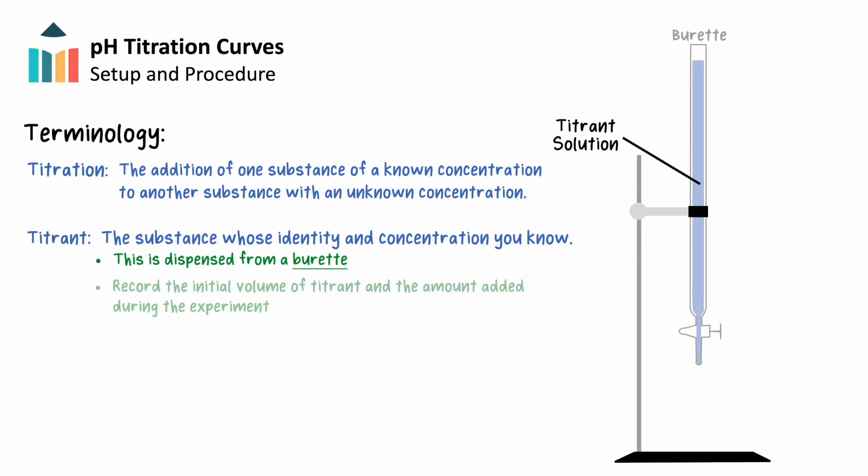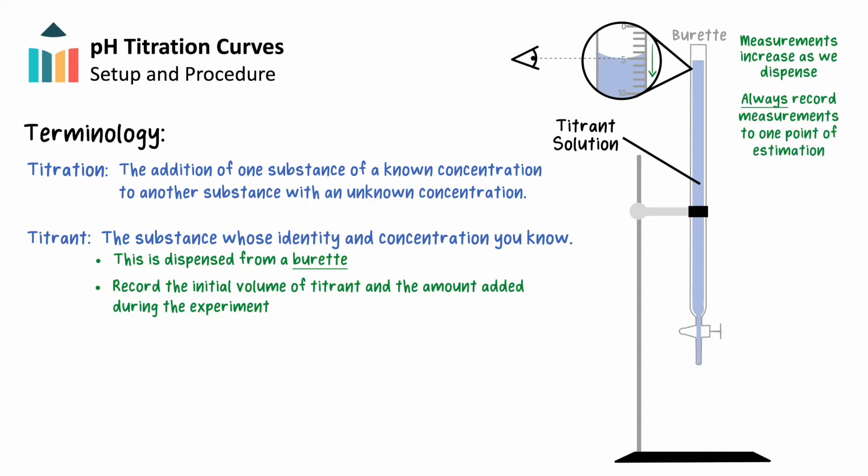First, be sure to record your initial volume of titrant in the burette, and to do so from the bottom of the meniscus curve created by the solution. The first time you make this measurement, you might notice something weird. The burette's measurement scale is backwards from other glassware. Don't worry, this is intentional. Remember that we're dispensing from the burette. So, since the 0 cm mark is at the top, we'll be able to more easily read how much titrant has been dispensed as we conduct our experiment. And no worries if your initial volume of titrant is not exactly at that 0 cm cubed mark. Just be sure to record the initial volume and adjust the volumes added throughout the experiment to see the actual volume dispensed. Remember, always record measurements to one point of estimation to make sure that you're reflecting the accuracy and precision of the instrument you're using.